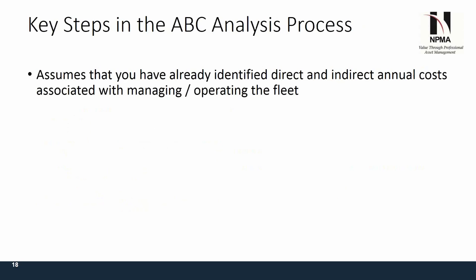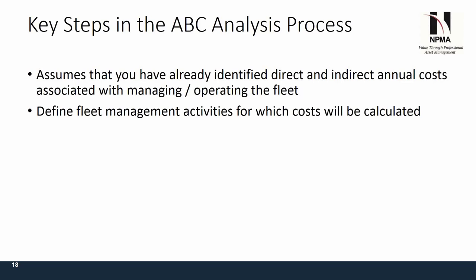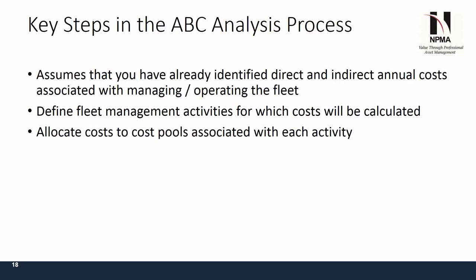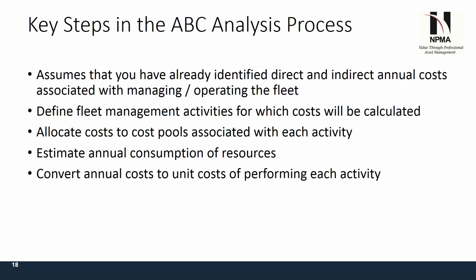The key steps in an ABC analysis process begin with identifying all direct and indirect annual costs associated with managing and operating the fleet. Next, you define fleet management activities for which costs will be calculated, developing cost pools — or buckets — for each activity. You then allocate costs to those pools, estimate the annual consumption of resources, convert annual costs to unit costs for performing each activity, and assess whether those costs are reasonable.